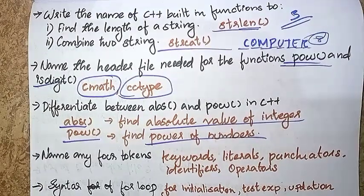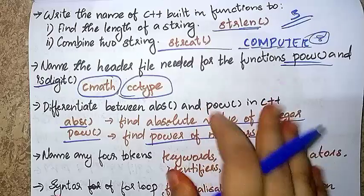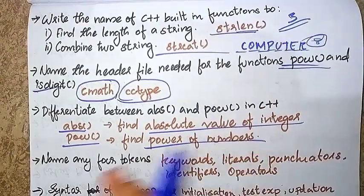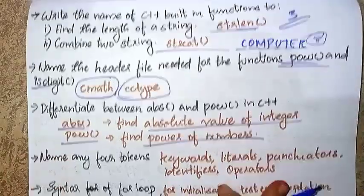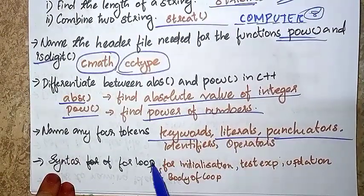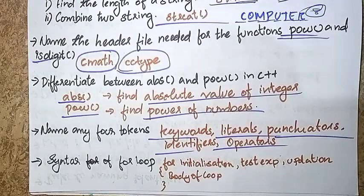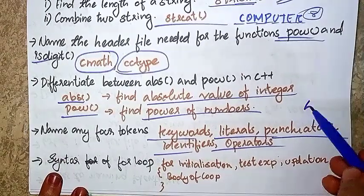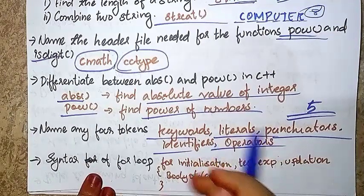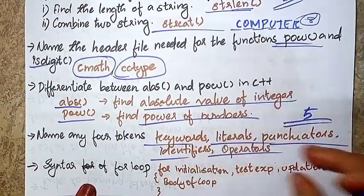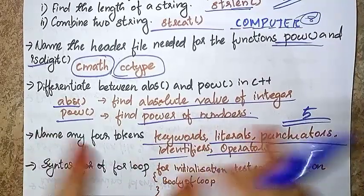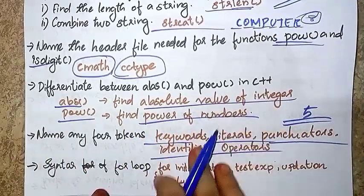The next one is 4 tokens. We will answer this question. The tokens are: Keywords, Literals, Punctuators, Identifiers, and Operators. We will explain each one — Keywords explanation, Literals explanation, Punctuators explanation, Identifiers and Operators explanation.